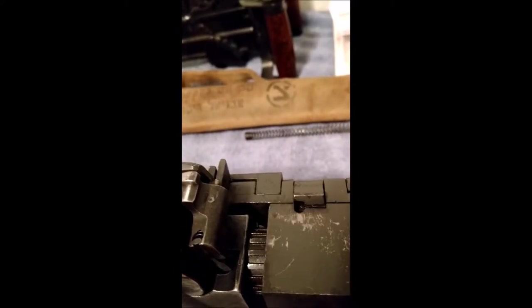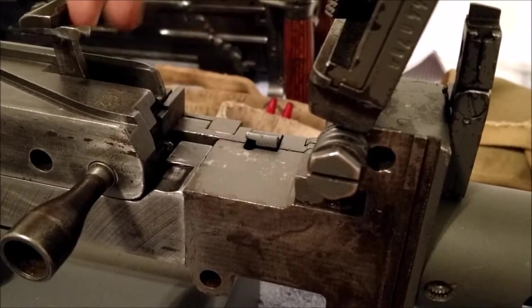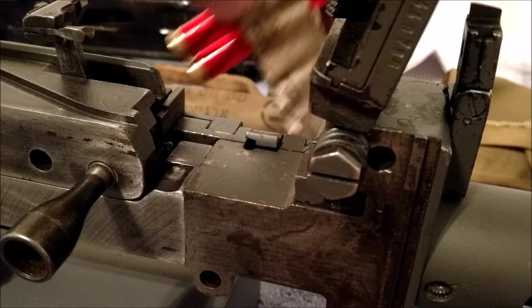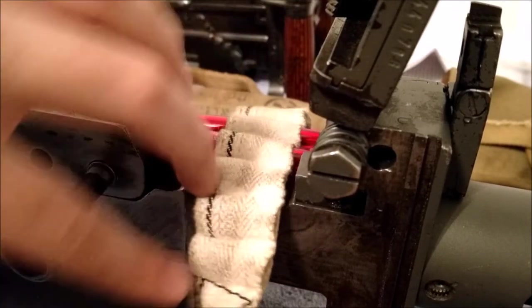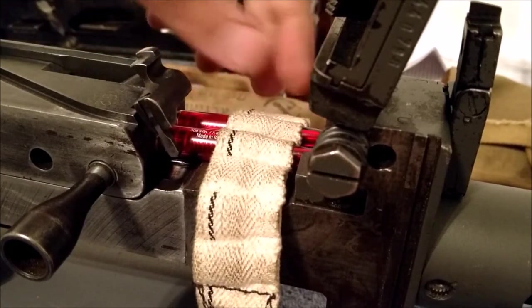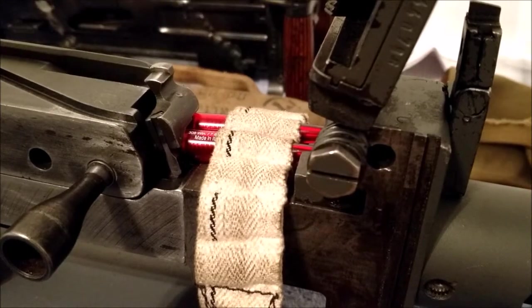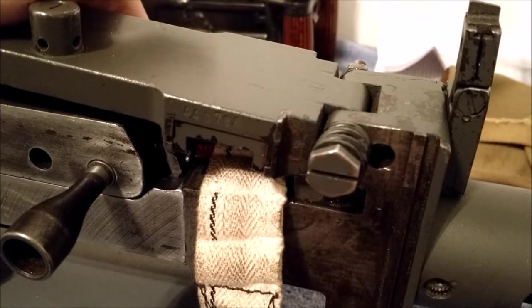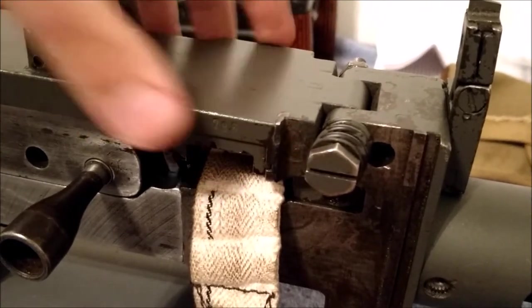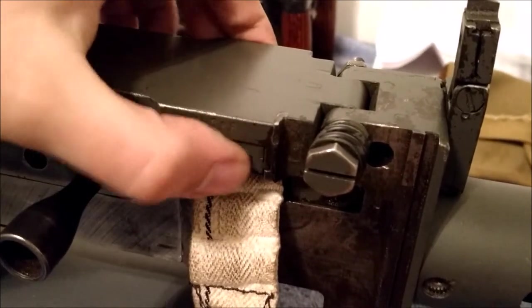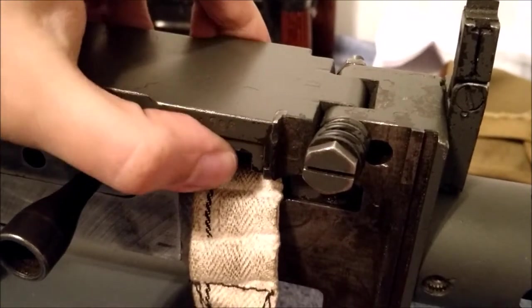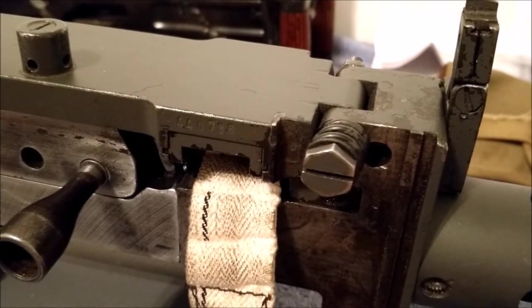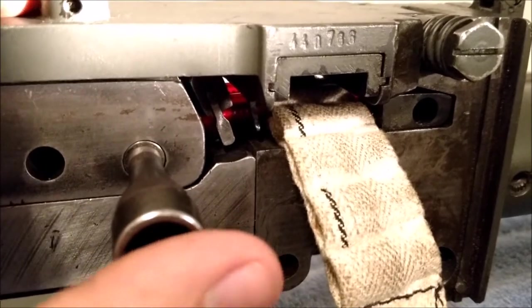We've got our bolt in battery. Lift up the extractor, put our cloth belt with our 308 dummies in place, let the extractor fall back down. Make sure the lever is in the right place on the top cover to interface with the bolt.